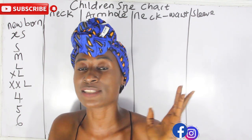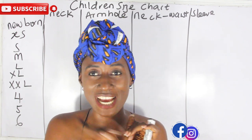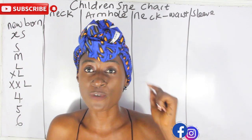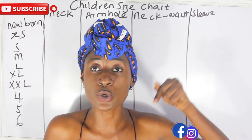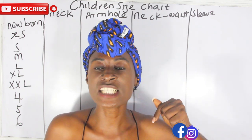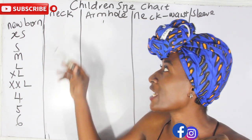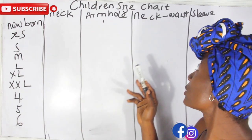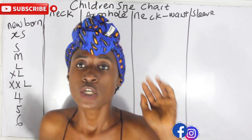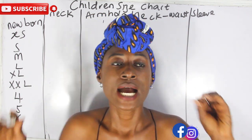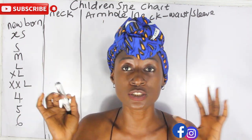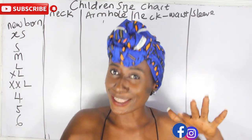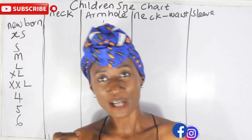The first part of this video is where I talked about the chest — children have chest, not bust — the waist, the hip, and the shoulder measurements. The link is also going to be in the description box below. So this video is the second part of the series. We have our neckline, our angle, neck to waist, and our sleeve. The reason why I split this video is because I don't want it to be too long. If I filmed all the children's size charts in one video, it might be above one hour.